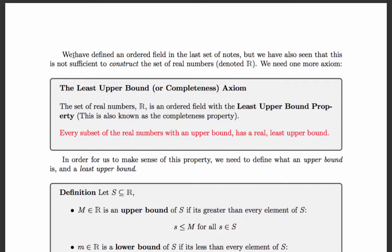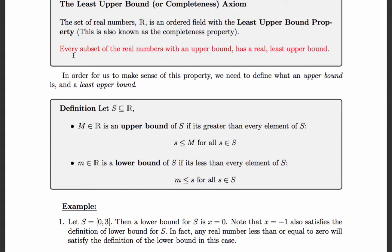Well, what's an upper bound and what's a least upper bound? An upper bound is exactly what it says — it's an upper bound. If m is an upper bound of a subset, then m is greater than every element in the subset. You might imagine from that what the definition of a lower bound is: m is a lower bound of a subset if it's less than or equal to every element in the subset. Both upper bounds and lower bounds can be greater than or equal to, or less than or equal to, respectively.